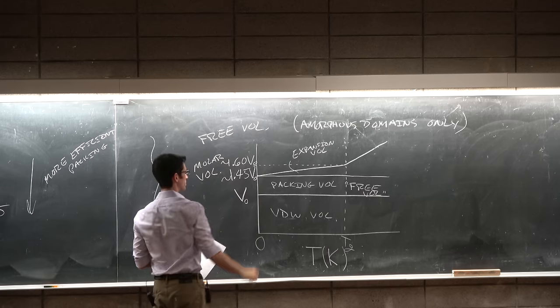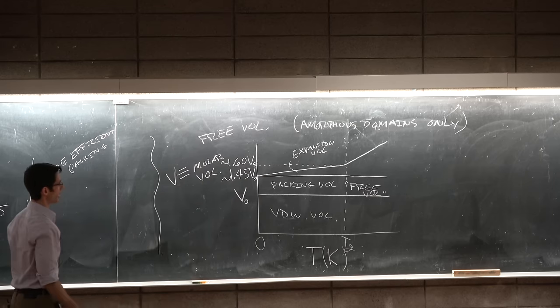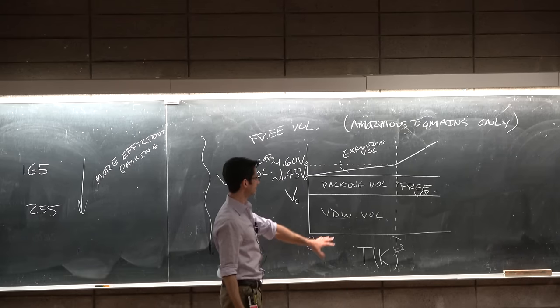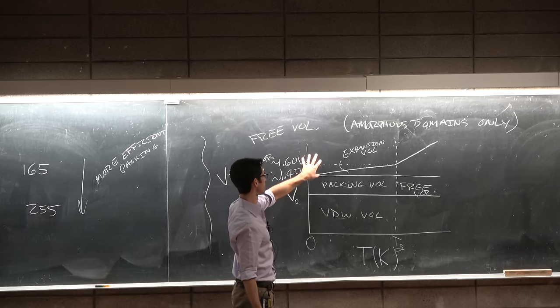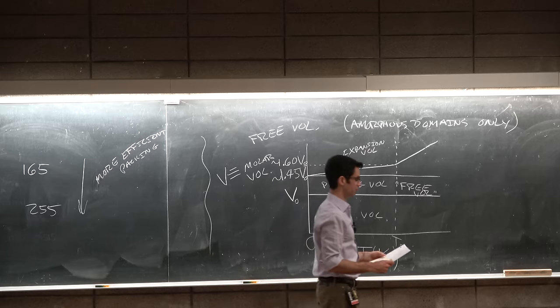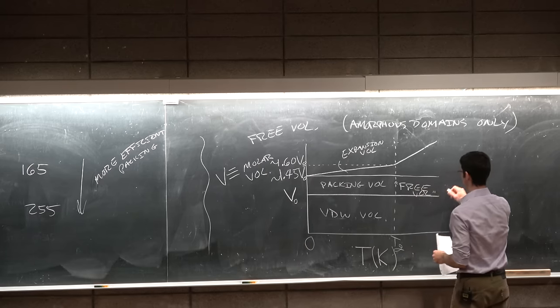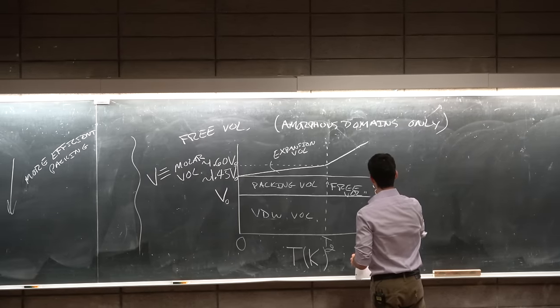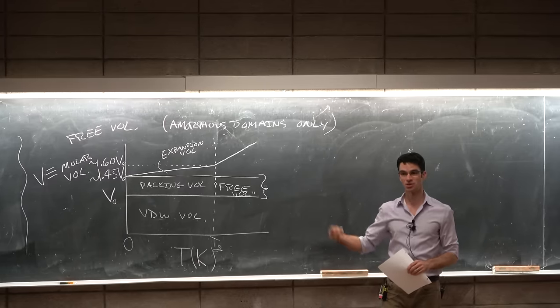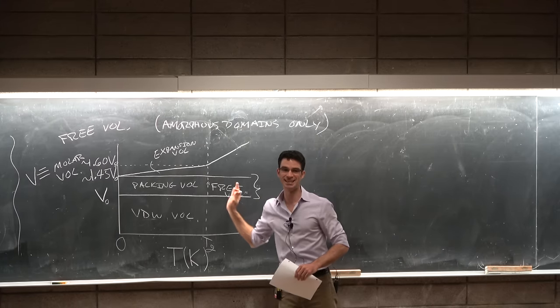Then if you're starting at absolute zero and you start increasing the temperature, then the molecular motions, so the kinetic energy as a manifestation of temperature, is increasing the vibrations and the amounts of motion in the material, which increases the average volume. If they're all shaking, then the thing gets bigger. And this is just thermal expansion. And the thermal expansion changes at TG. And this is the expansion volume.